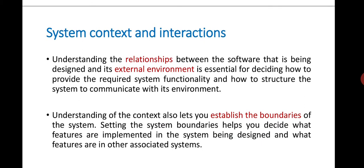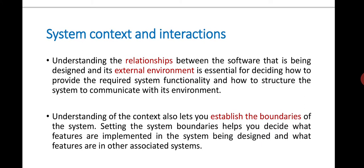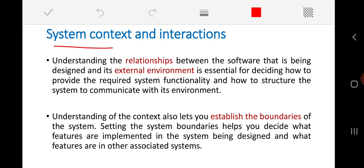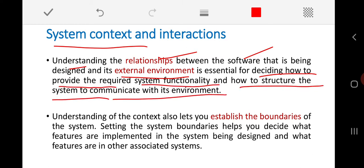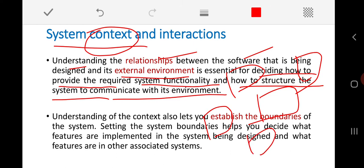The first stage is system context and interactions. System context means understanding the relationship between the software being designed and its external environment, which is essential for deciding how to provide the required system functionality and how to structure the system to communicate with its environment. My system will work alongside many other existing surrounding systems, and we need to identify those and understand the relationships between them.